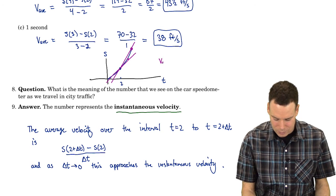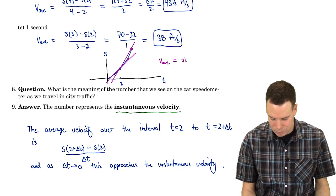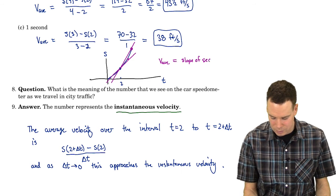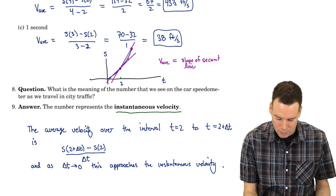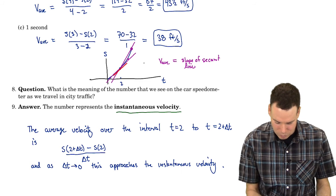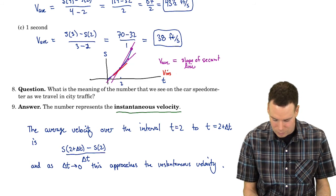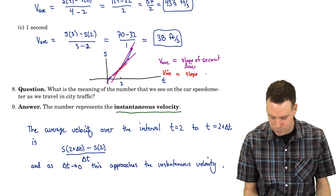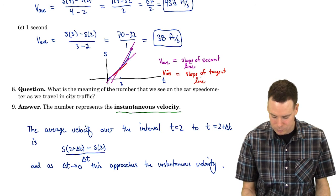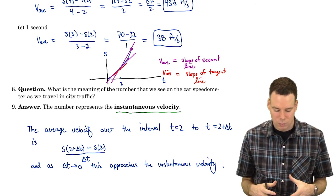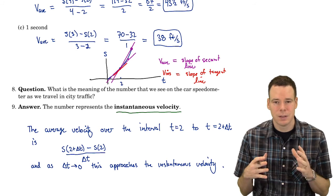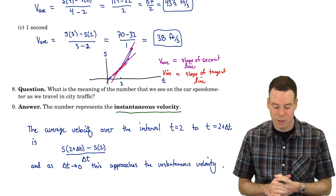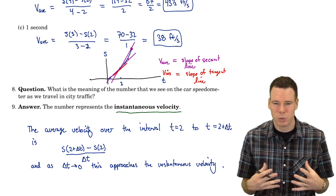Average velocity is just equal to the slope of the secant line. And at a given point, the instantaneous velocity is equal to the slope of the tangent line. So in terms of the position-versus-time graph, average velocities are slopes of secant lines and instantaneous velocities are slopes of tangent lines. The tangent line problem and the velocity problem are really one and the same problem.